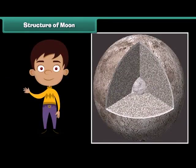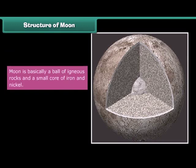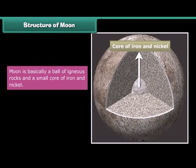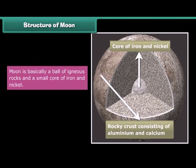Hey, have a look on the interior of the moon. Moon is basically a ball of igneous rocks and a small core of iron and nickel, and there is a rocky crust consisting of aluminum and calcium.